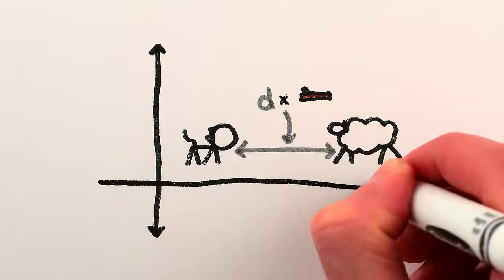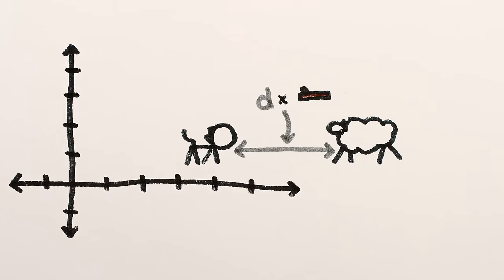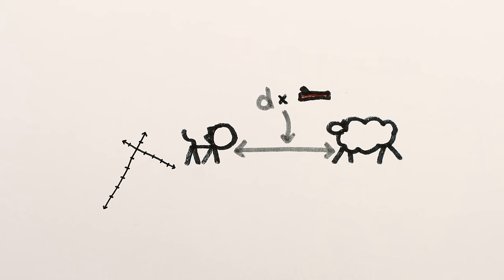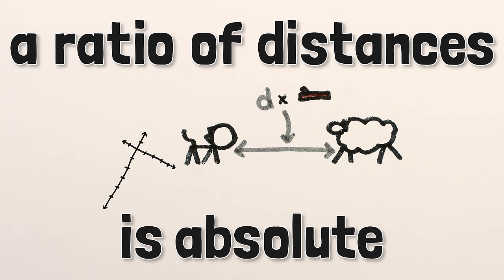This is an example of an even more general physical truth. The distance between two things, measured in terms of another physical thing, doesn't change when you change your perspective by shifting your point of reference or orientation, or the spacing of your tick marks. In relativity parlance, we'd say that the ratio of two distances is absolute.